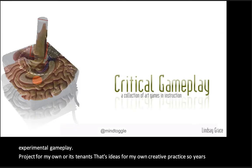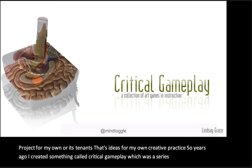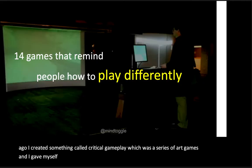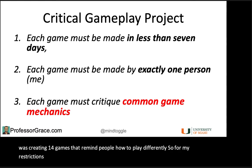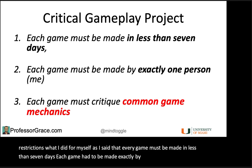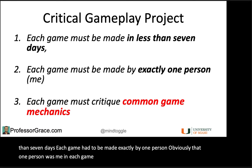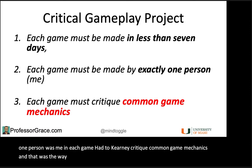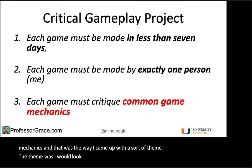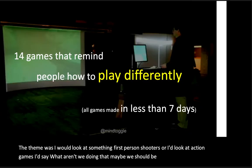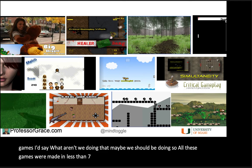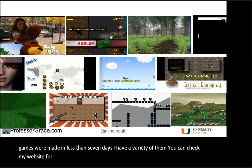I actually used the Experimental Gameplay Project's tenets for my own creative practice. Years ago, I created something called Critical Gameplay, which was a series of art games, and I gave myself similar restrictions. The whole idea was that I was creating 14 games that remind people how to play differently. Every game had to be made in less than seven days, by exactly one person, and each game had to critique common game mechanics. The theme was I would look at something like first-person shooters or action games and say, what aren't we doing that maybe we should be doing? All these games were made in less than seven days. You can check my website for the different experiences.